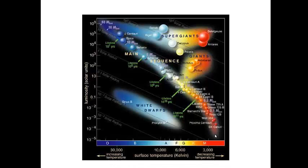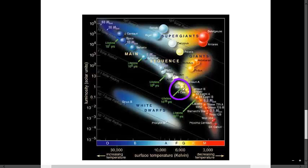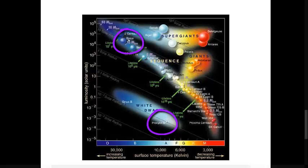One can easily use the HR diagram to compare stars. For example, if we pick our sun and compare it to a red supergiant like Antares, our sun is warmer than Antares, but Antares is brighter than our sun. If we compare the white dwarf Procyon B to the blue dwarf Spica, although Spica is a little bit warmer than Procyon B, Procyon B is dimmer than Spica.